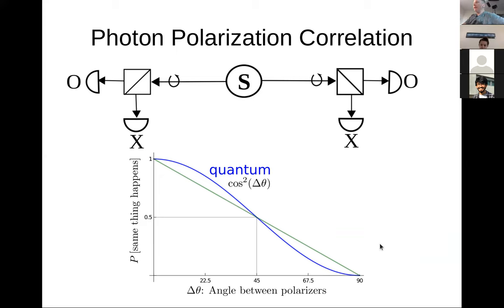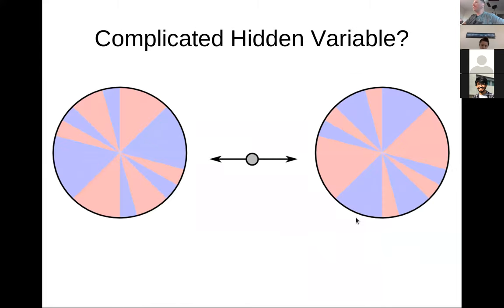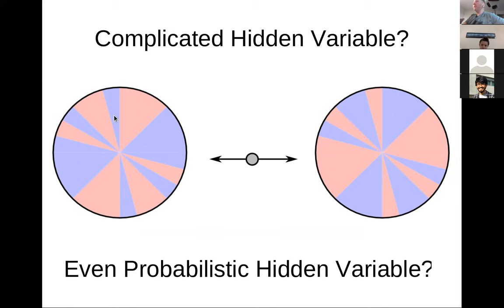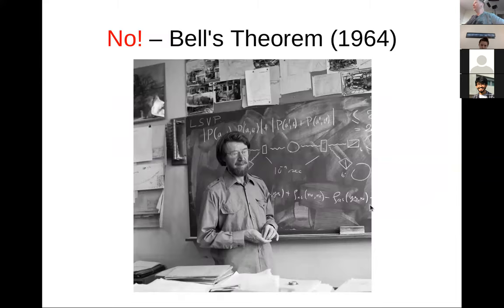No matter how you complicate the hidden variables — even making them probabilistic, with each wedge colored some intermediate color representing a probabilistic local decision at the detector — no amount of complicated local physics could possibly explain what's going on. So Einstein, Podolsky, and Rosen's dream of explaining quantum probabilities with local hidden variables is just not right.